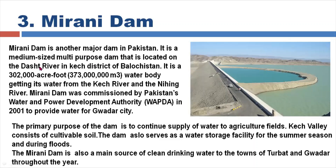The Mirani Dam is another major dam in Pakistan. It is a medium-sized multi-purpose dam located on the Dasht River in the Kech district of Balochistan. The storage capacity is 332,000 acre feet. Mirani Dam was commissioned by Pakistan's Water and Power Development Authority (WAPDA) in 2001 to provide water for Gwadar city.